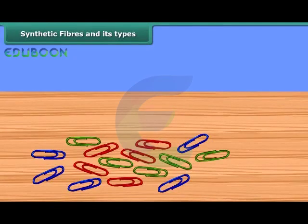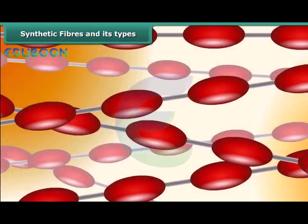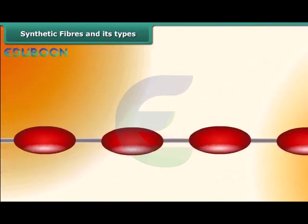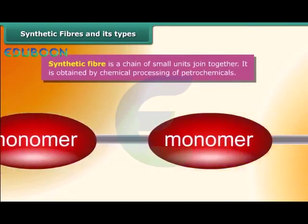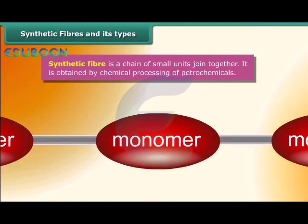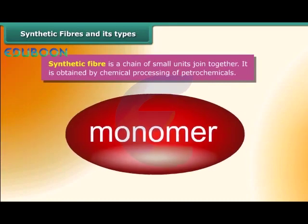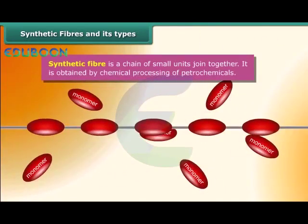Now let us join together a number of paper clips. What do you observe? This chain of paper clips is similar to the organization of a polymer. Here many small units combine to form a large unit known as a polymer. Each small unit is actually a chemical substance called a monomer. Synthetic fiber is an example of a polymer, and synthetic fibers are obtained by chemical processing of petrochemicals.